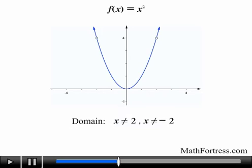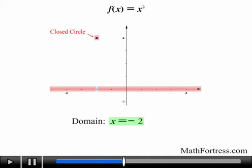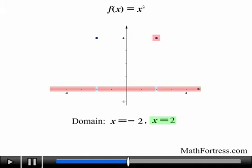What if we want the opposite — only turning on the function at a specific point? Say I want to turn on the function only at x = -2. The inequality x = -2 means the function is defined only at that point. If I also want to include x = 2, I add x = 2 to the restriction. Then only the points at x = -2 and x = 2 are visible; everything else is turned off.